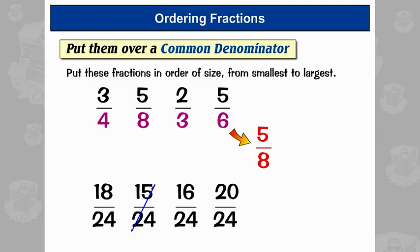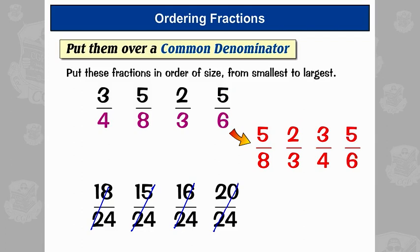The next smallest is sixteen twenty-fourths, which is two-thirds. Then eighteen twenty-fourths, which is three-quarters. And the biggest fraction is twenty twenty-fourths, which is five-sixths. So there they are all nicely in order.